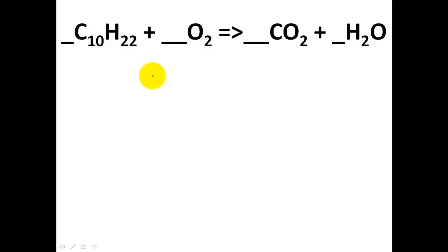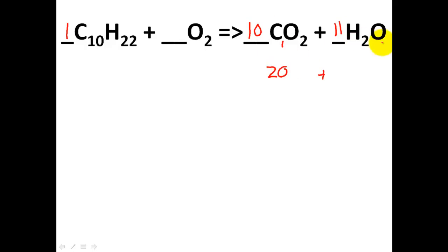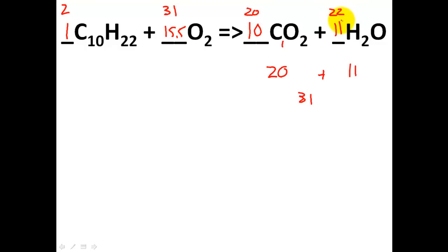In our last example, oxygen is the most popular element — I'll balance that last. Let's go to carbons first: I have ten carbons, so I put a ten on the other side. Ten times one — carbons are balanced. Hydrogens: twenty-two. Eleven times two is twenty-two. Now oxygens: ten times two is twenty oxygens plus eleven times one is eleven, giving me thirty-one total. Thirty-one divided by two is fifteen-point-five — you're not allowed to use a decimal coefficient. To fix this, multiply every coefficient by two. The coefficients become two, thirty-one, twenty, and twenty-two. I can't reduce those any lower, so the atom inventory would confirm equal atoms on both sides.